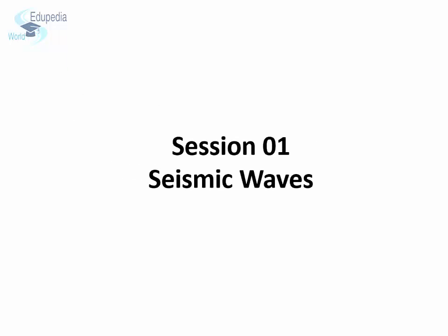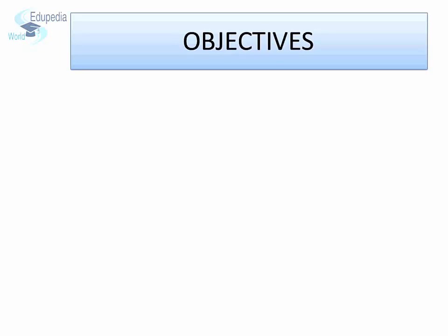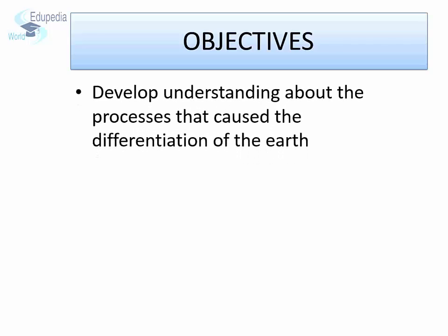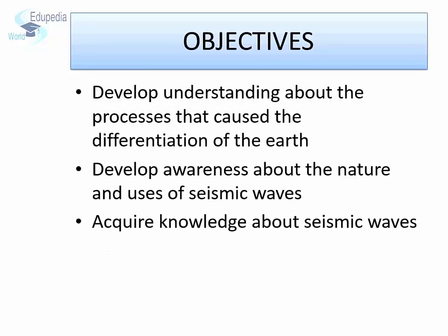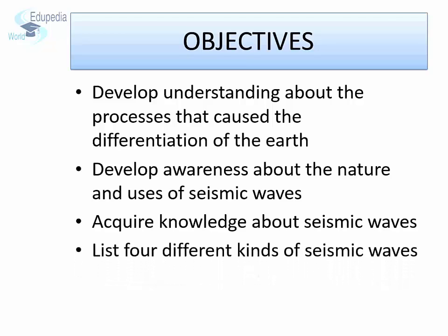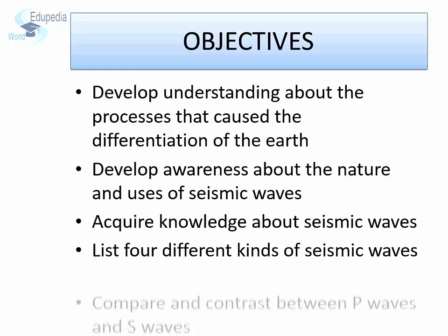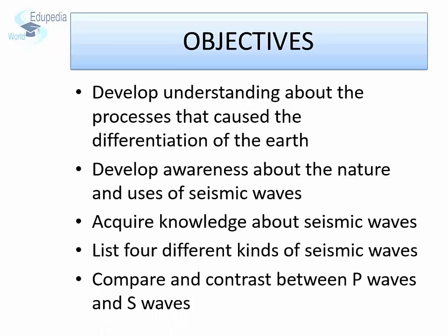This is the first session of the chapter. In this session, we are going to learn in detail about seismic waves. We aim to achieve the following objectives: develop understanding about the processes that caused the differentiation of the Earth; develop awareness about the nature and uses of seismic waves; acquire knowledge about seismic waves; list four different kinds of seismic waves; and compare and contrast between P waves and S waves.